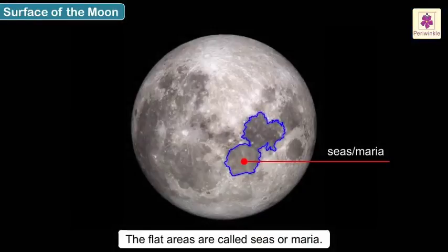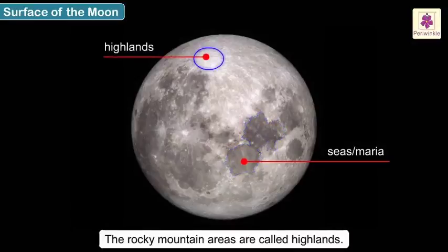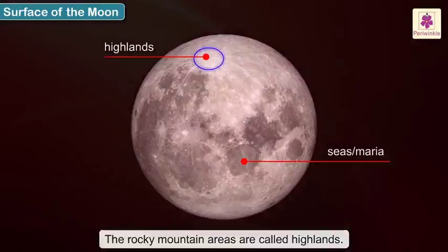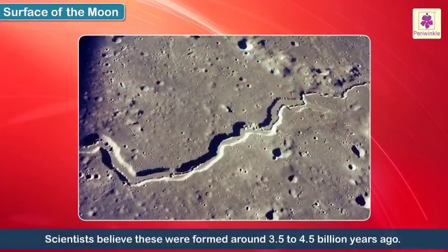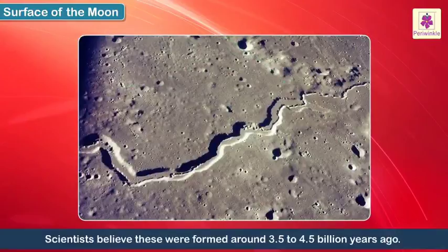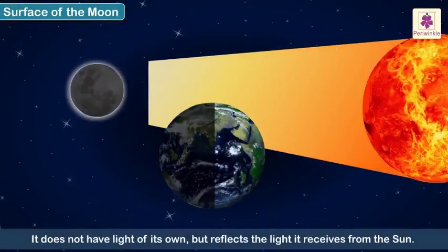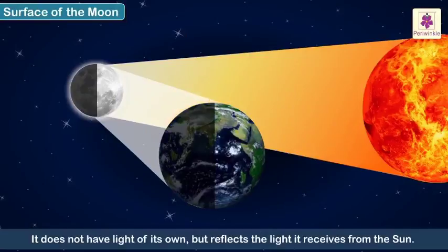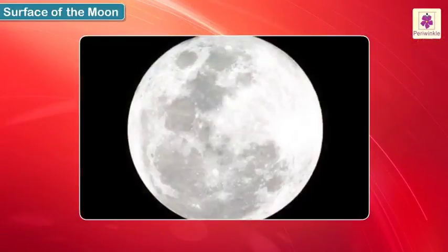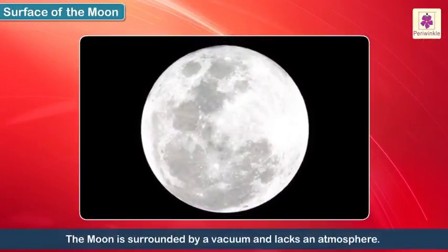seas or maria. The rocky mountain areas are called highlands. Scientists believe these were formed around 3.5 to 4.5 billion years ago. It does not have light of its own, but reflects the light it receives from the Sun.